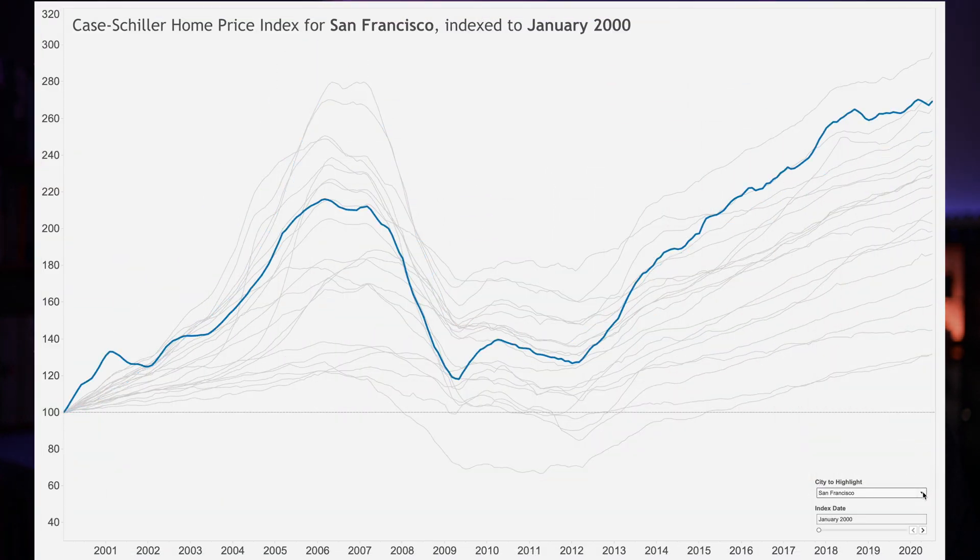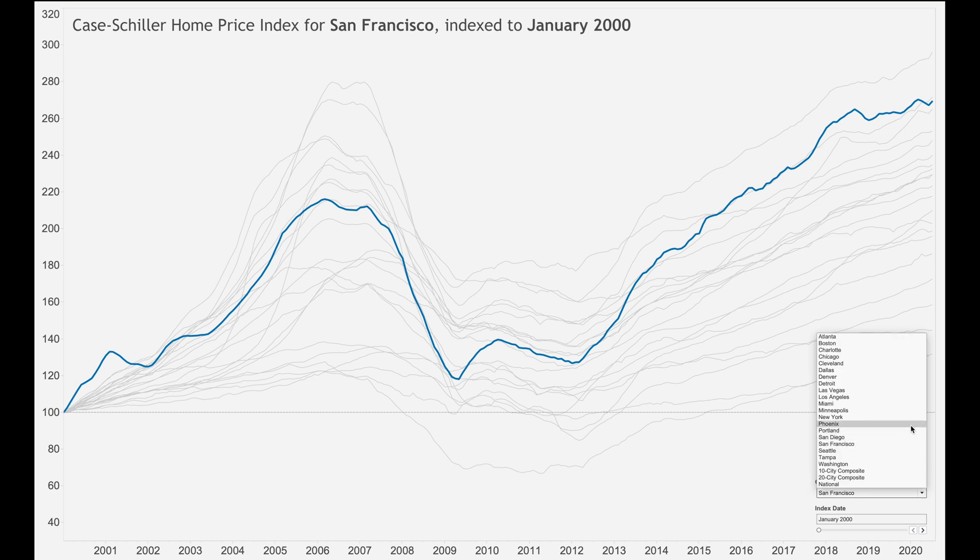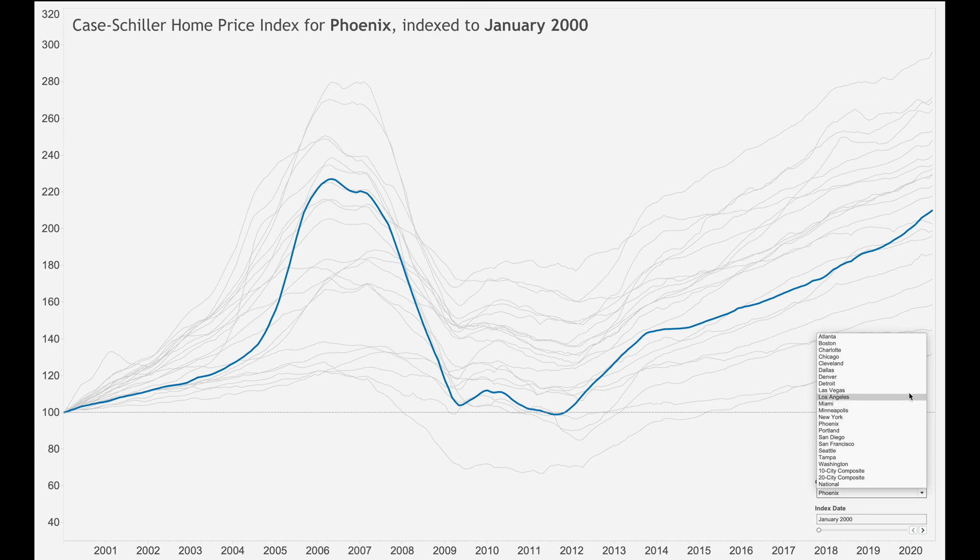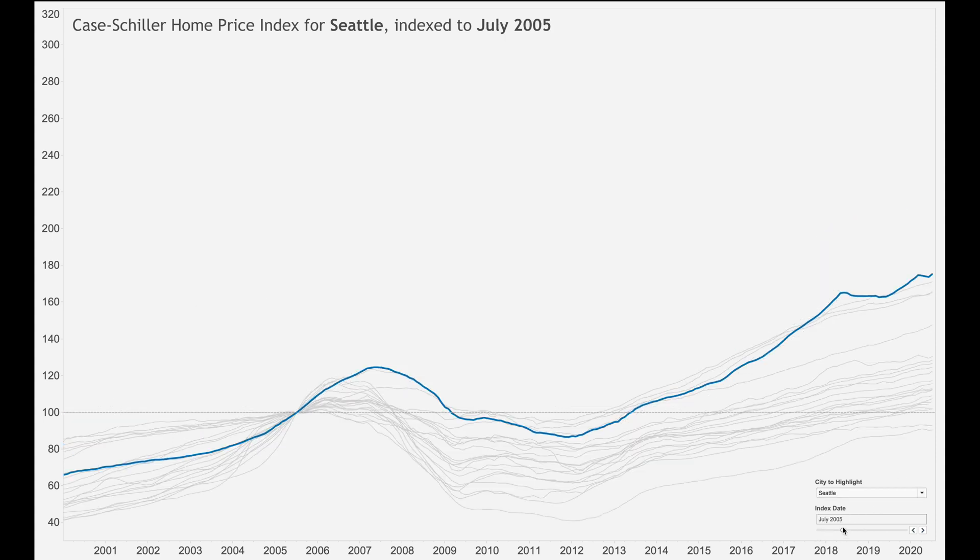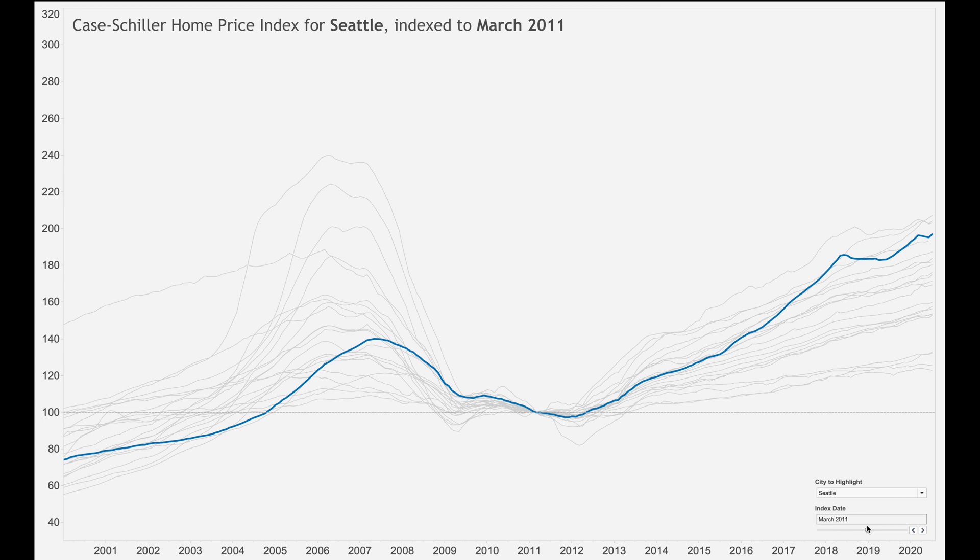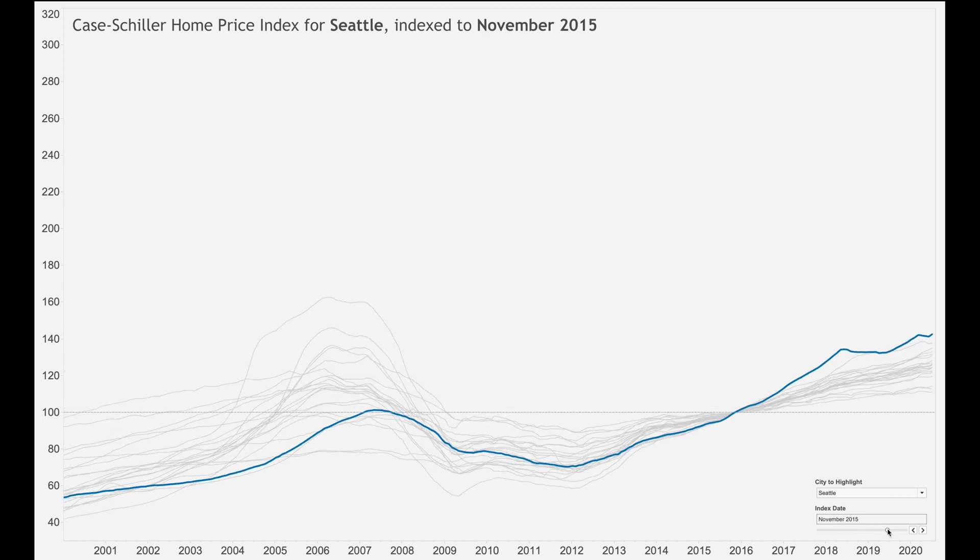This is it here in Tableau with data up until July 2020. On this dashboard, I can do two things. I can highlight the city I'm most interested in, which has nothing to do with index charts, I just like to be able to do it. And I can pick the months that I want to use as the index. When I do that, all the data points are recomputed so that the date I specified now gets the value of 100 for each city.